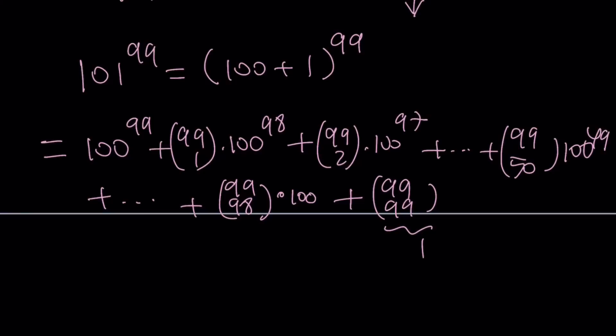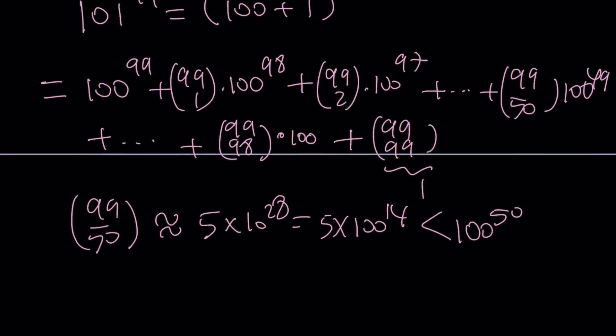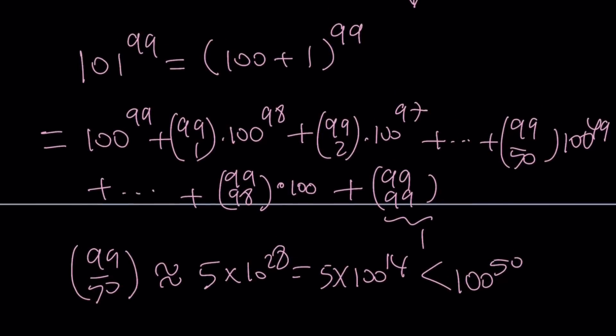And here's what happens. 99 choose 50, by the way, is approximately 5 times 10 to the power of 28, which is 5 times 100 to the power of 14. And guess what? That's actually less than 100 to the power of 50. That's kind of like an interesting thing. So here's what happens. We actually get each of these terms. And by the way, how many terms are there in the expansion of 101 to the power of 99? It's always n plus 1. So we have 100 terms.